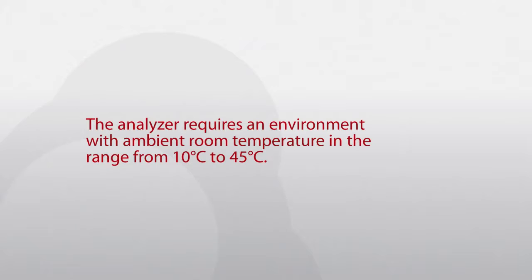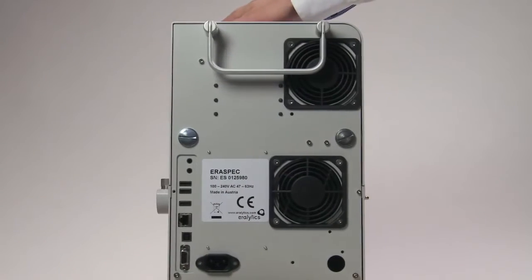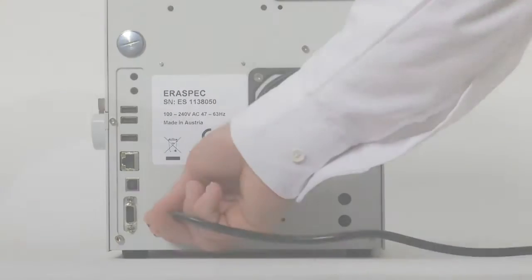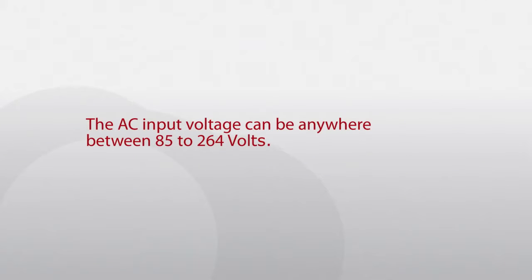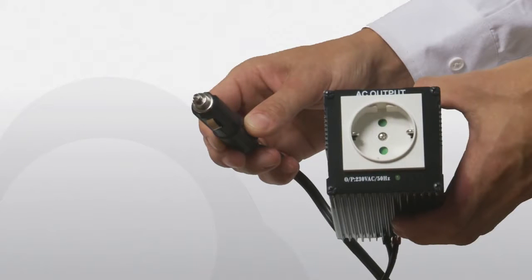Turn the instrument and connect the power cable to the plug on the rear side of the instrument. The AC input voltage can be anywhere between 85 and 264 volts. If the instrument is used in mobile laboratories or in the field, it can also be operated at 12 volts DC using a DC to AC converter.